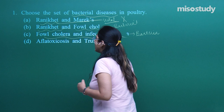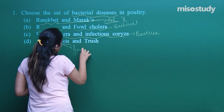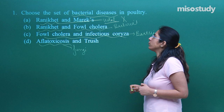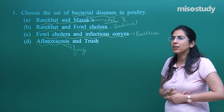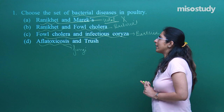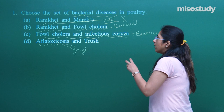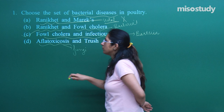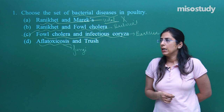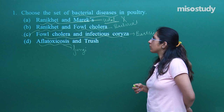When we talk about option D, that is caused by fungi. Now let us read the question again — they said we have to choose the correct option with diseases caused by bacteria. Ranikhet and Marek's disease are viral diseases. Option B has Ranikhet (viral) and fowl cholera (bacterial). In option C both are bacterial diseases. Option D involves aflatoxicosis, which is a fungal disease. So the correct option for question 1 is C.